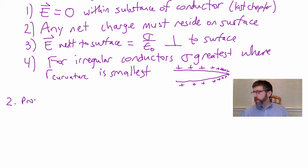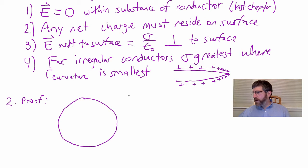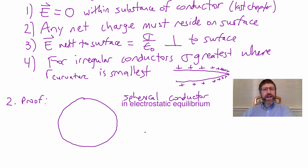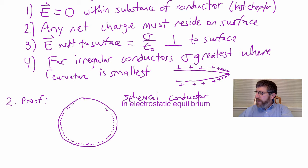Here's my proof. I want to take any conductor — I'll make it a spherical conductor in electrostatic equilibrium. I'm going to create a Gaussian surface within the conductor, inside the substance of the conductor, but arbitrarily close to the edge. You can get this as close as you want — literally right up against that edge — but you don't want to be on the outside of the conductor; you want to be within it.